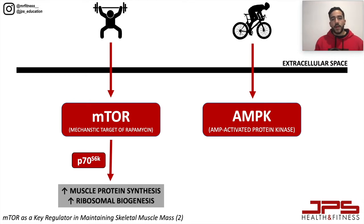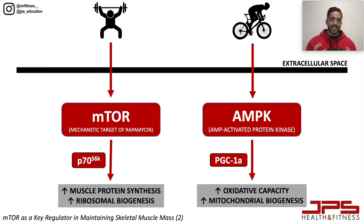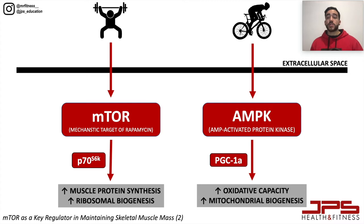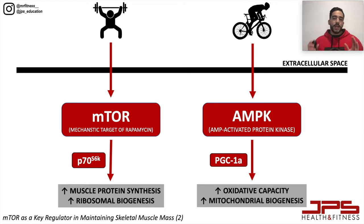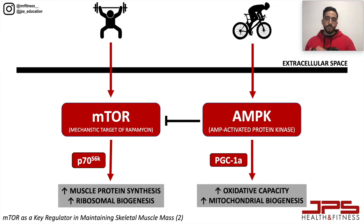On the other hand, we have AMPK, which we can term the energy sensor of the cell. Its role is to detect energy levels. When activated, it increases oxidative capacity — an aerobic adaptation — and promotes mitochondrial biogenesis, meaning the synthesis of more mitochondria, the powerhouse of the cell that creates energy. Crucially, AMPK has the ability to blunt mTOR, which is important to understand for what we'll be learning next.